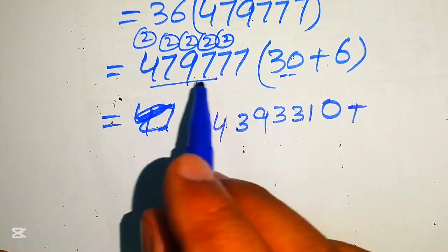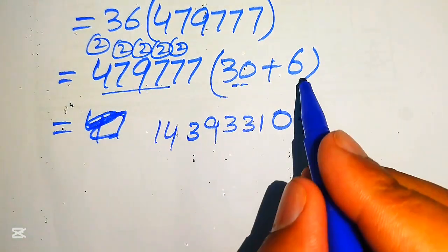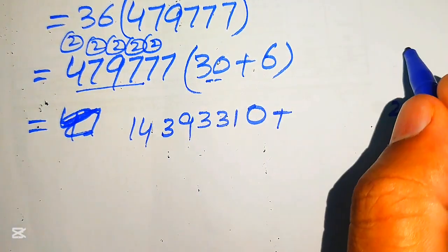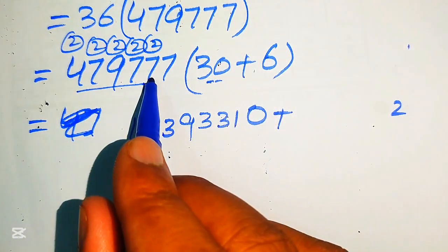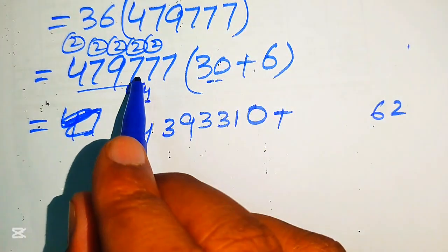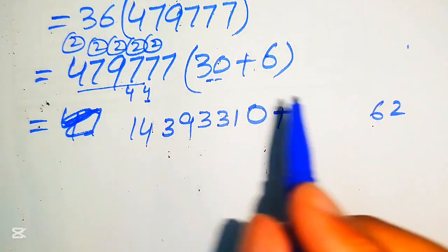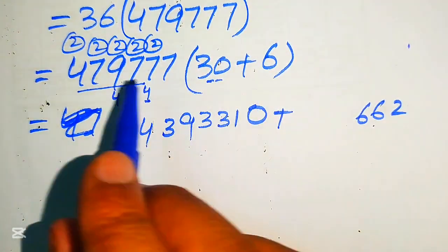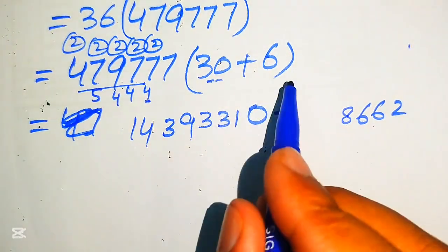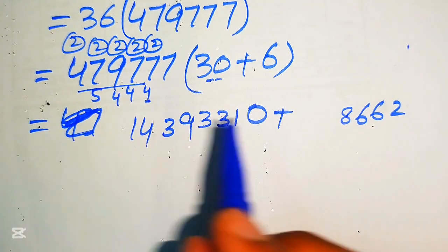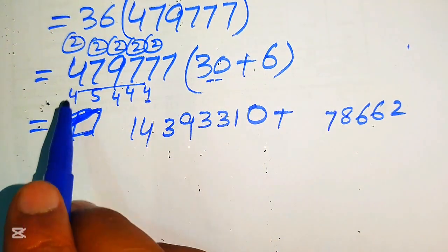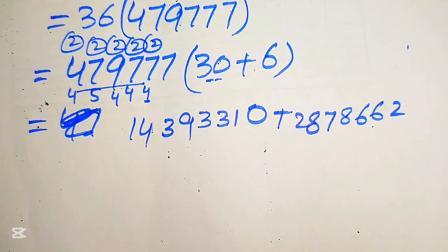Next, multiply 1679617 × 6: 6×7=42 write 2 carry 4; 6×7=42 plus 4 = 46 write 6 carry 4; 6×7=42 plus 4 = 46 write 6 carry 4; 6×9=54 plus 4 = 58 write 8 carry 5; 6×7=42 plus 5 = 47 write 7 carry 4; 6×4=24 plus 4 = 28.